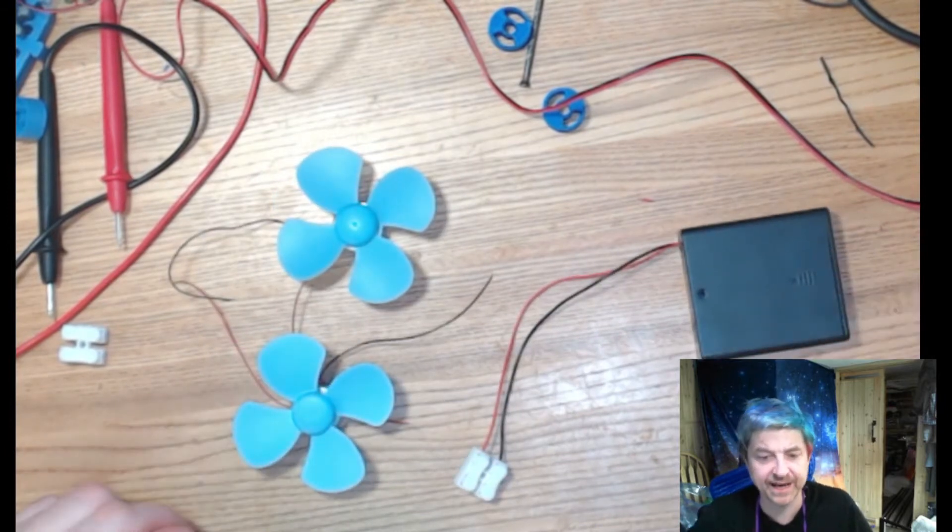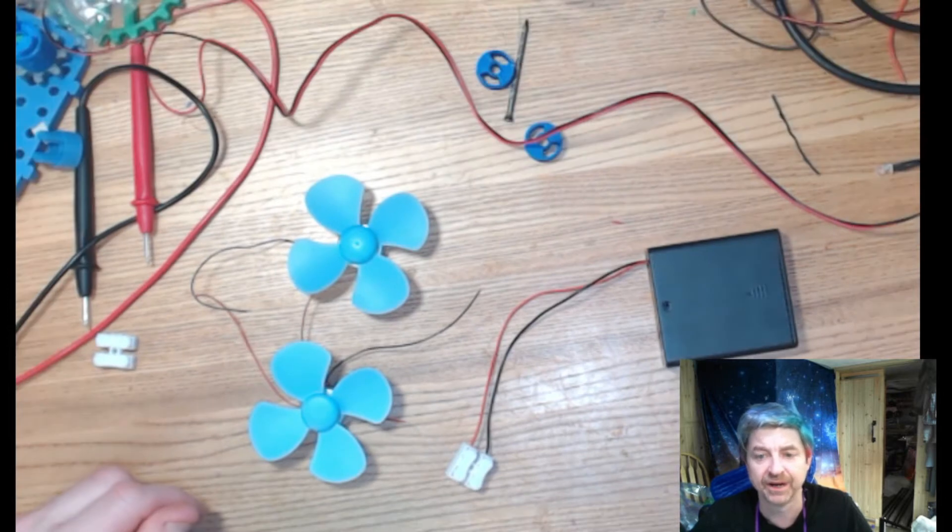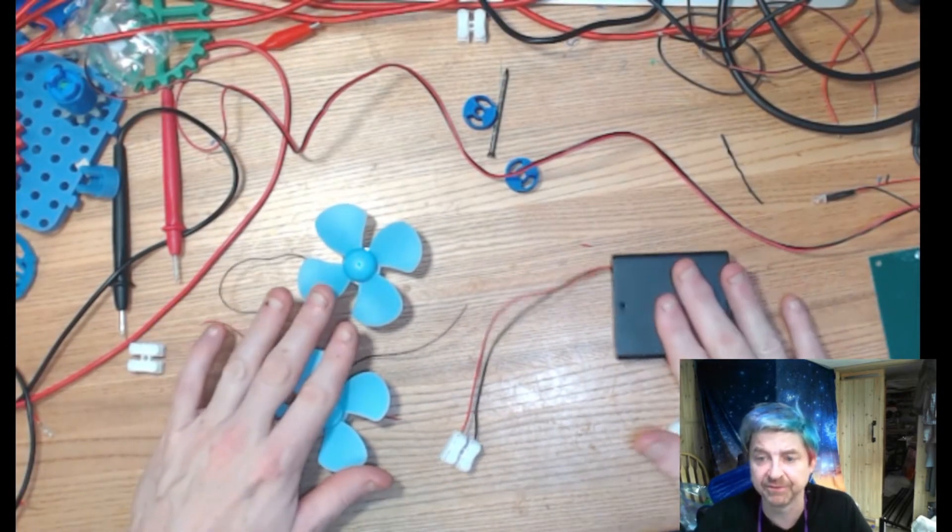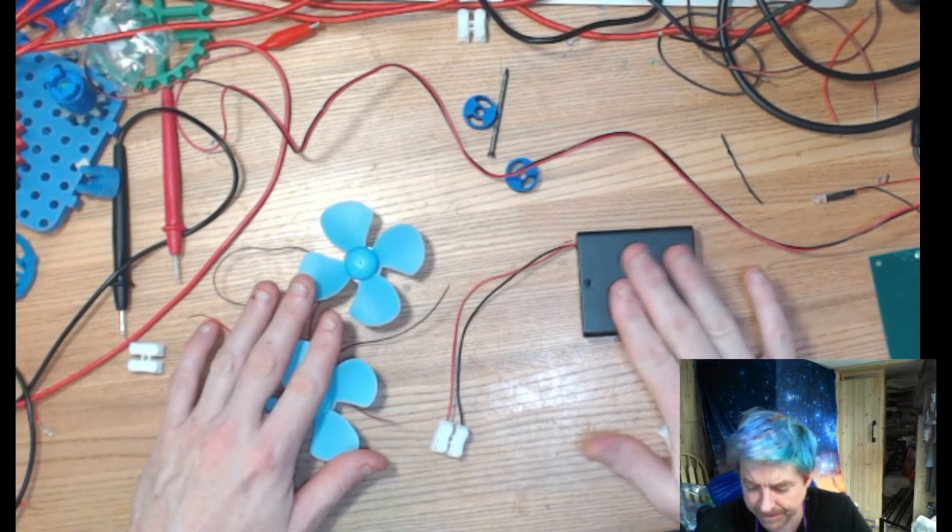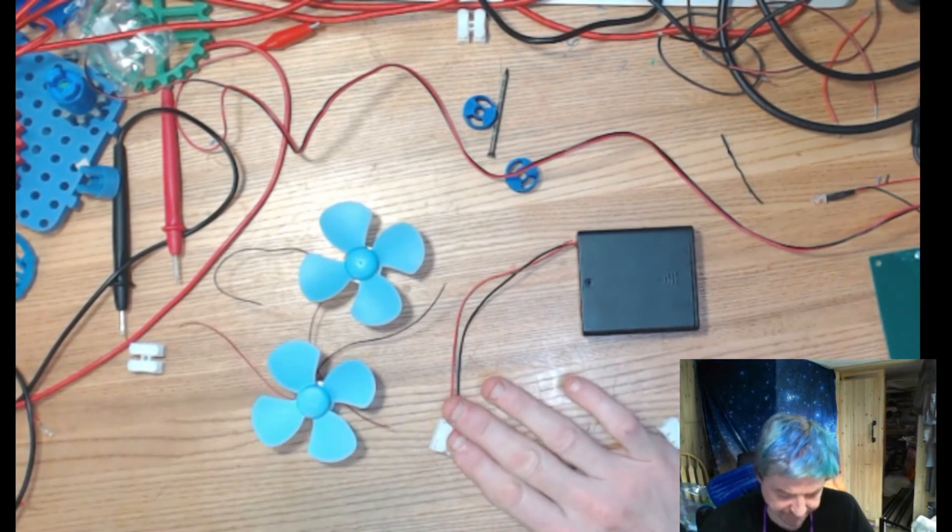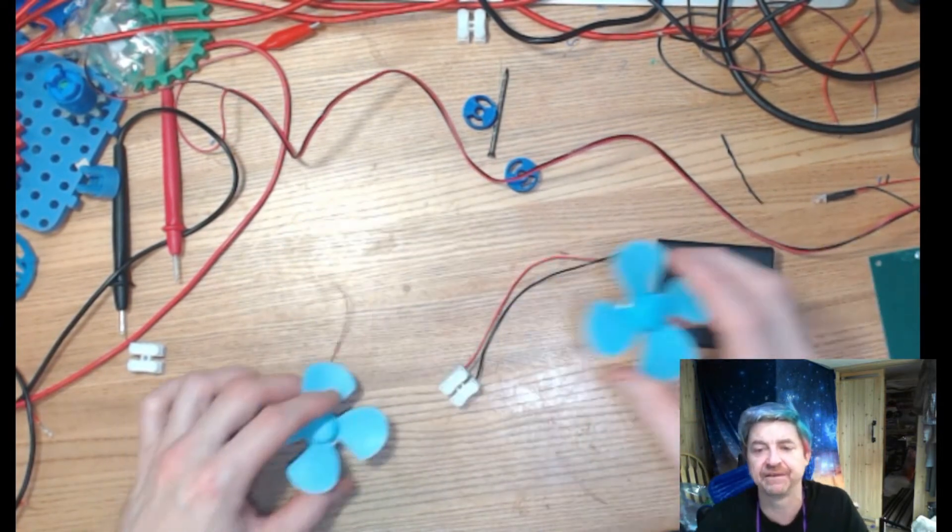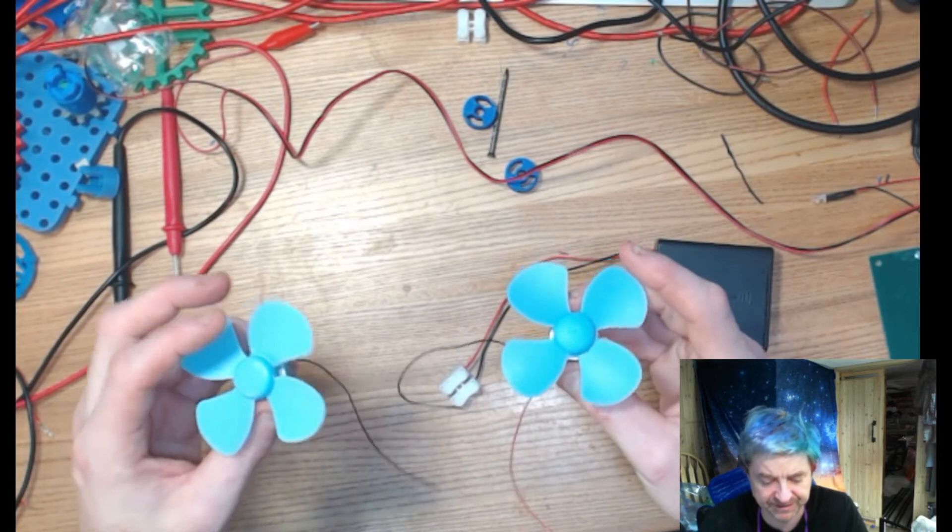Okay, so now in my circuit, let's zoom out a little bit here. I've got my positive, my battery source, and my little terminal block with positives and negatives. This time I'm going to have two fans, so you should have two fans in your kit.